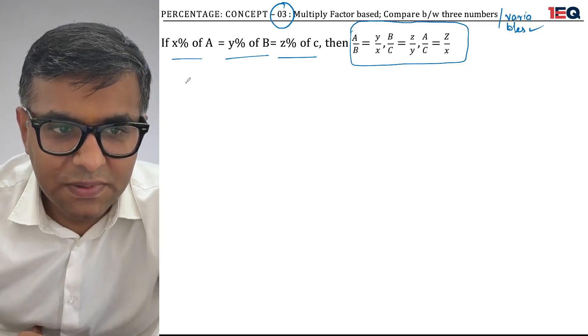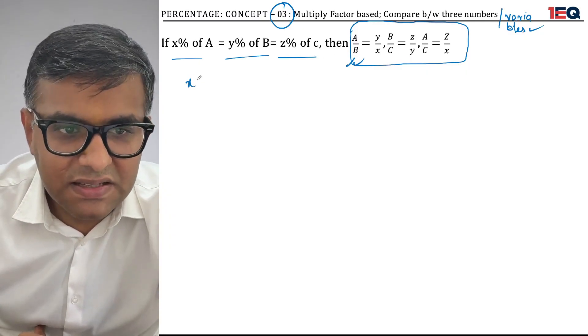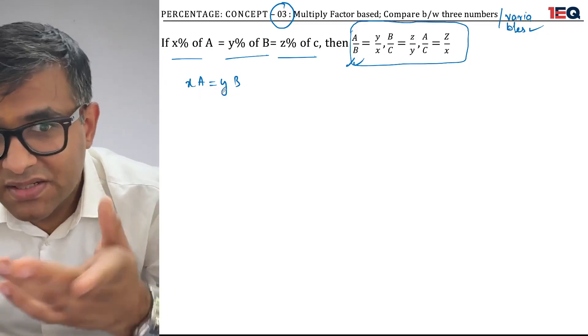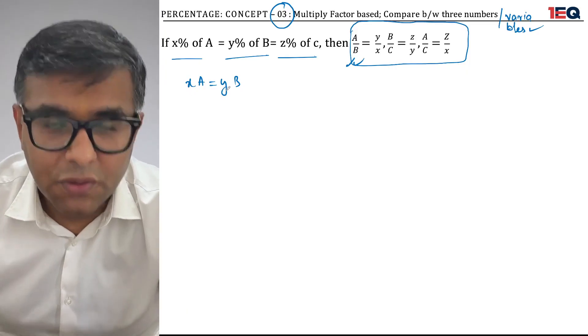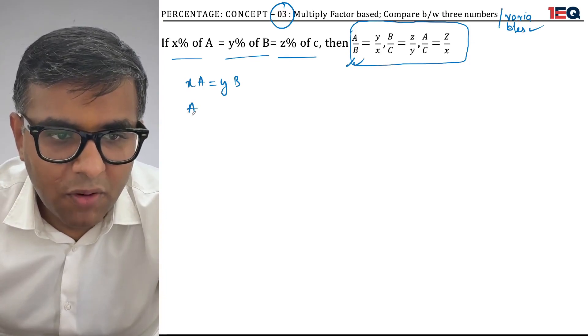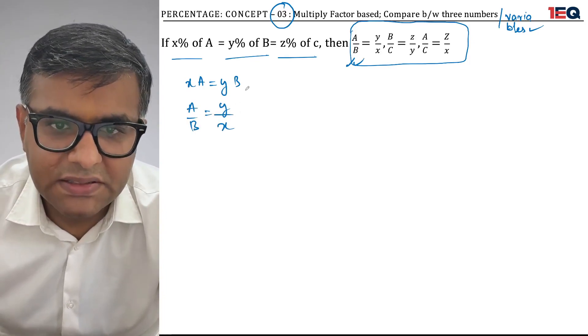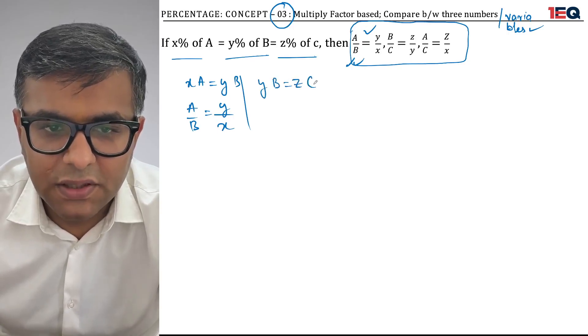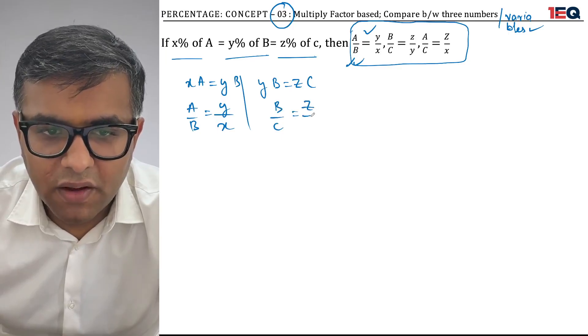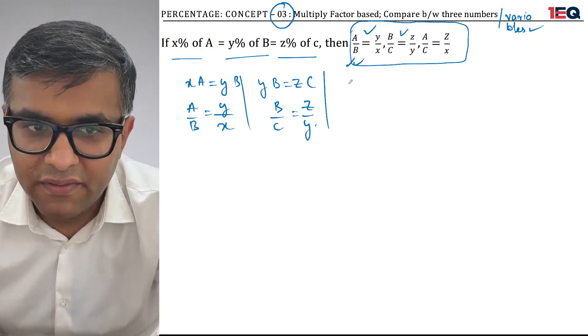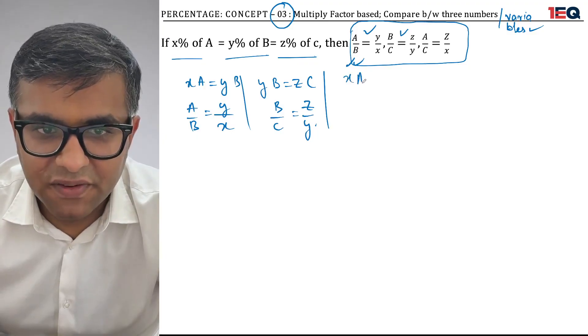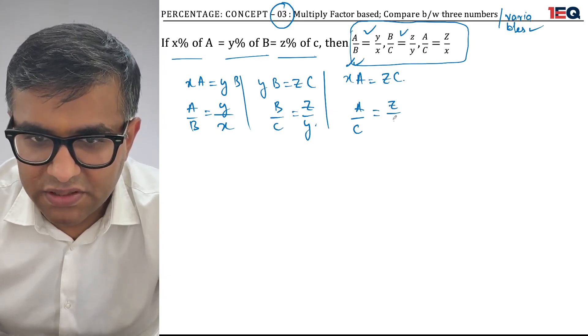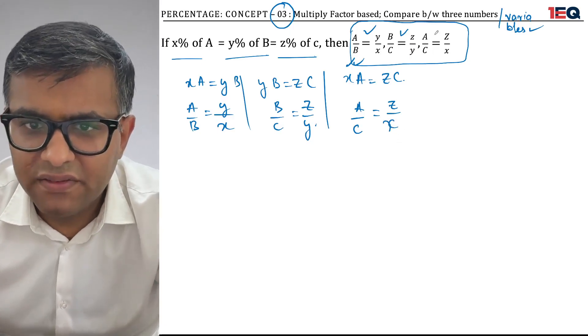Just look at this. If x% of A equals y% of B, when I compare A upon B, I'm simply giving it y upon x. So we've arrived at this solution. Secondly, when y% of B equals z% of C, B upon C is z upon y. This is the second solution. Third, x% of A equals z% of C, so A divided by C equals z upon x.